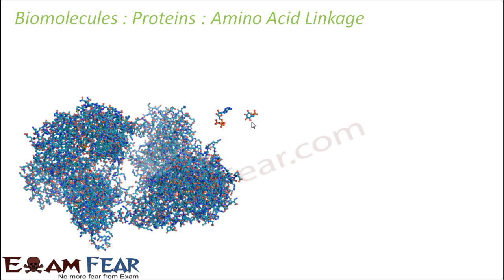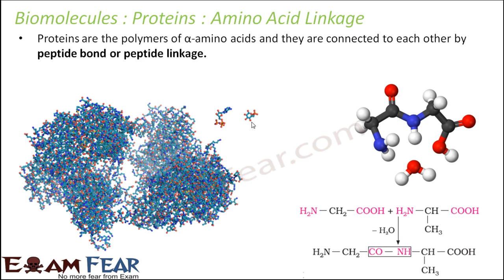Now we are going to talk about amino acid linkage. By this time we have a fair knowledge about amino acids. These amino acids are going to get linked to form proteins. Proteins are the polymers of alpha amino acids and they are connected to each other by a peptide bond or peptide linkage — similar to the glycosidic bond in carbohydrates, but occurring between two amino acids.